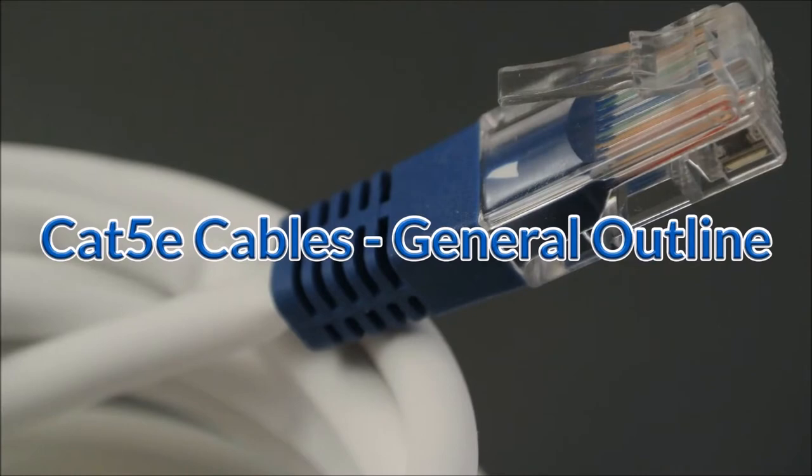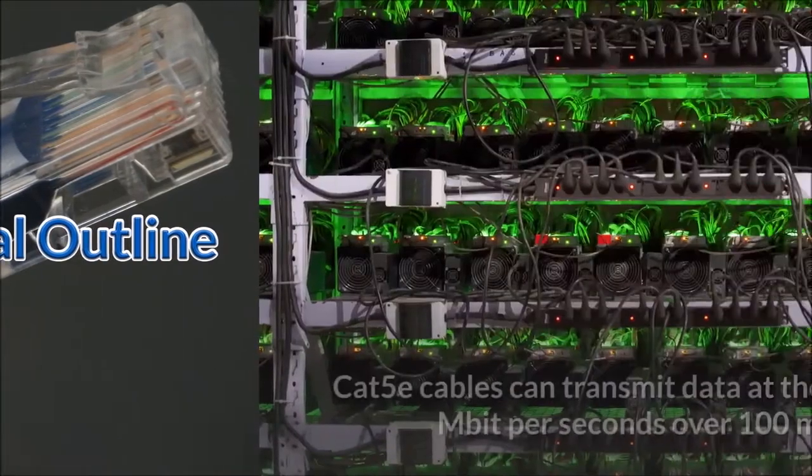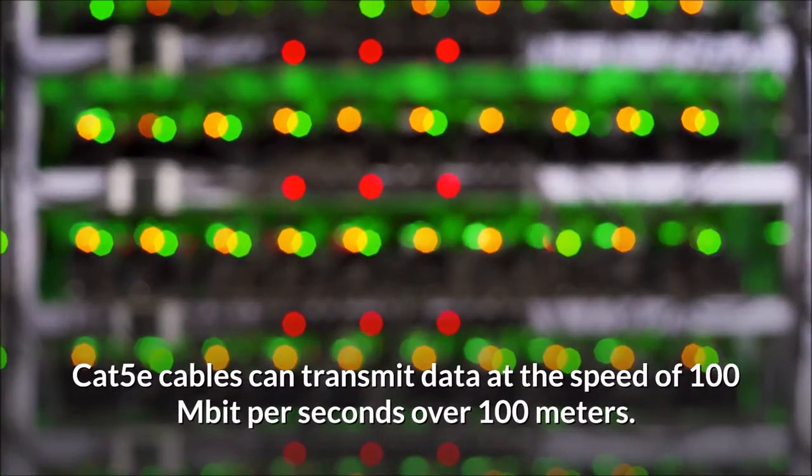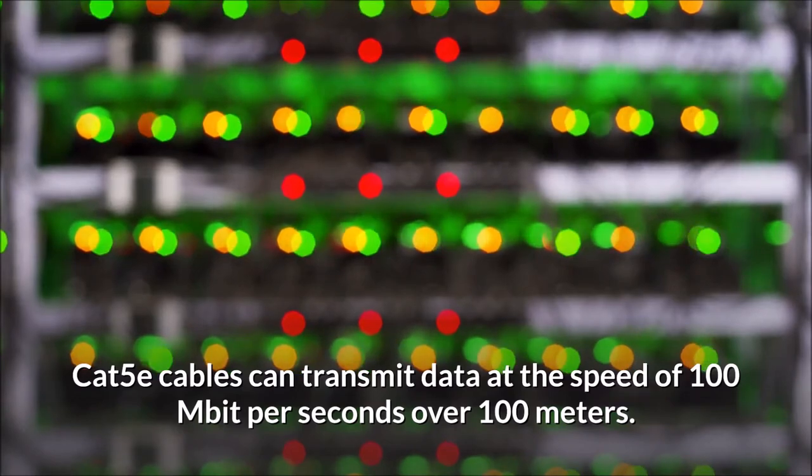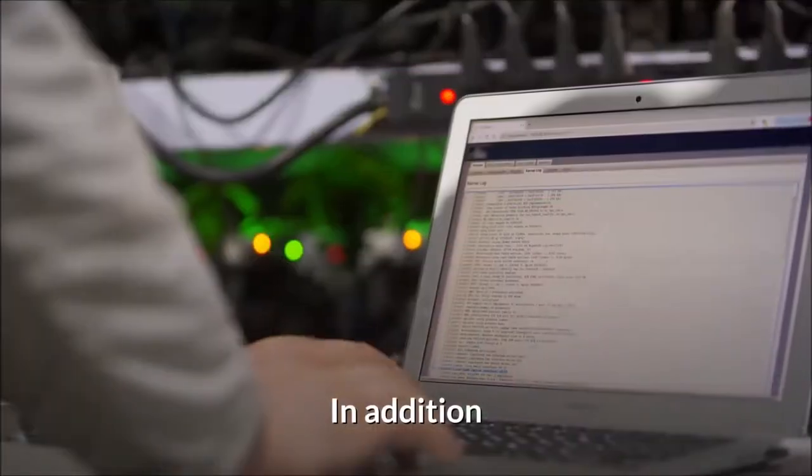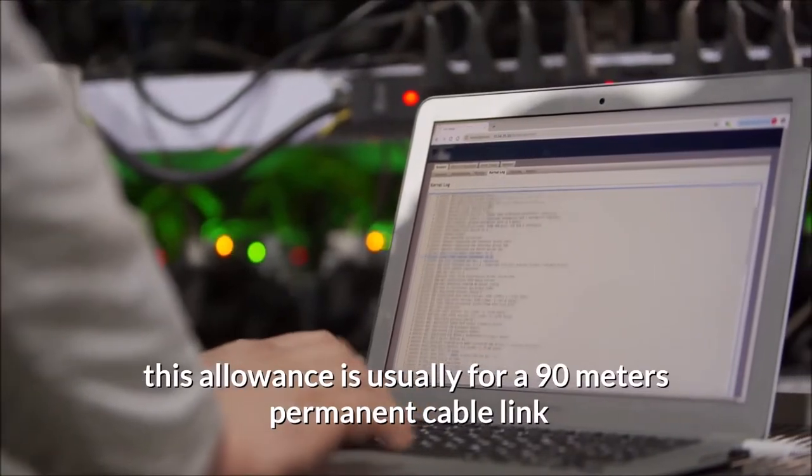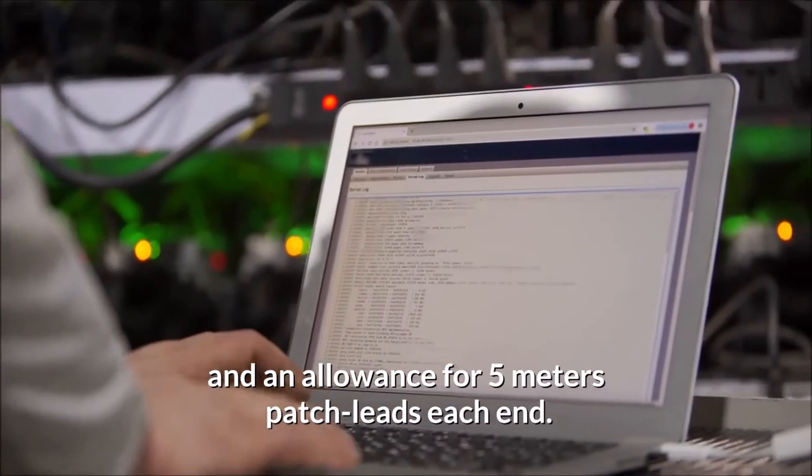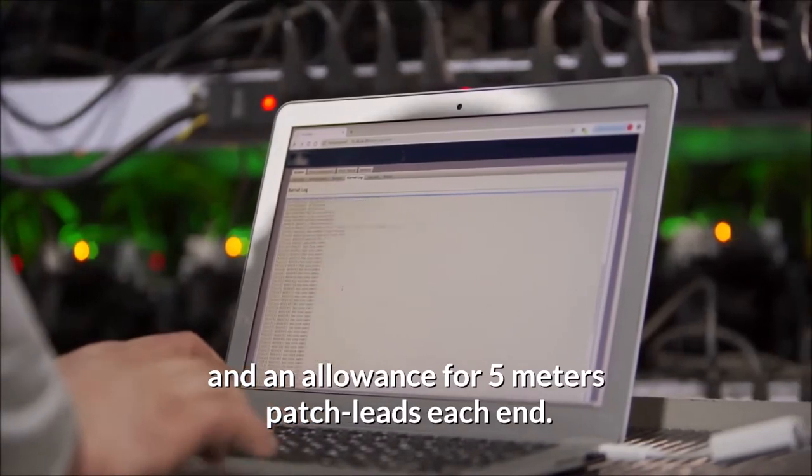Cat 5e cables, general outline. Cat 5e cables can transmit data at the speed of 100 Mbps over 100 meters. In addition, this allowance is usually for a 90 meter permanent cable link, and an allowance for 5 meter patch leads each end.